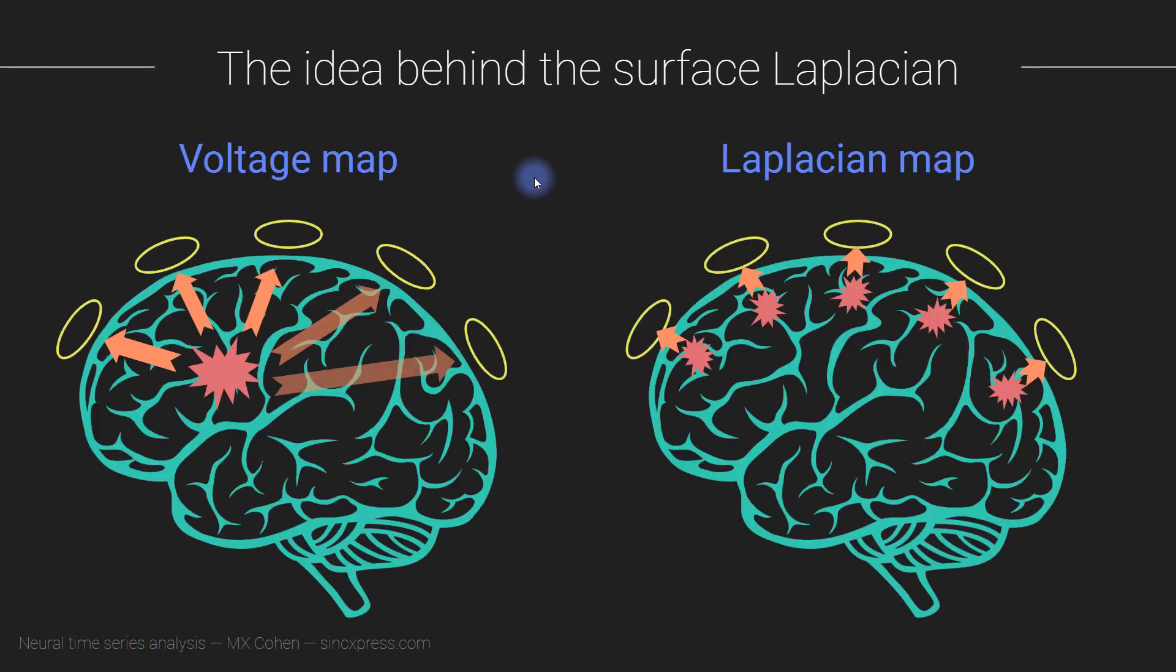Let me first start with the idea behind the Laplacian. Here we have a voltage map, essentially showing electrodes and one deep source in the brain whose electrical fields are projecting to every single electrode. The idea is that this situation is problematic for connectivity analyses because the synchronization that you can measure between these two electrodes is artificial, it's spurious, it's really reflecting the fact that these two electrodes are measuring the same source.